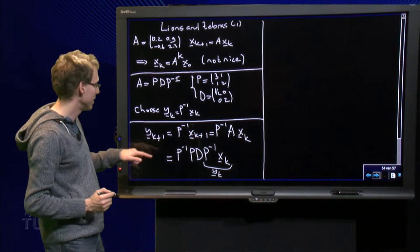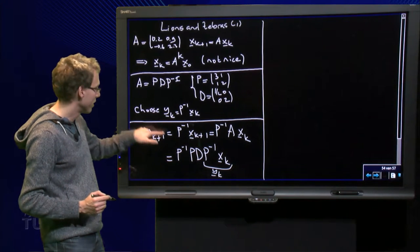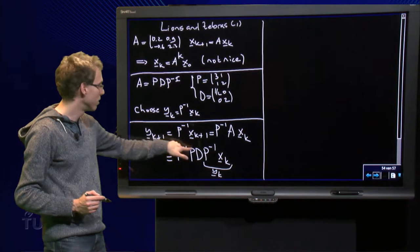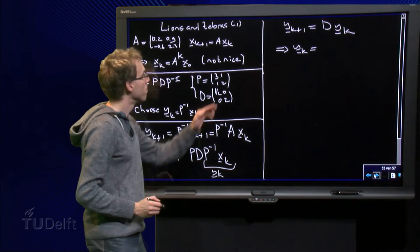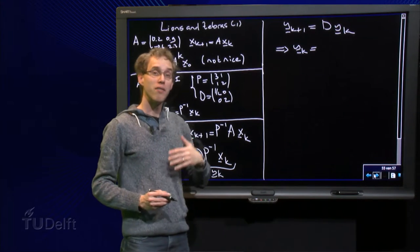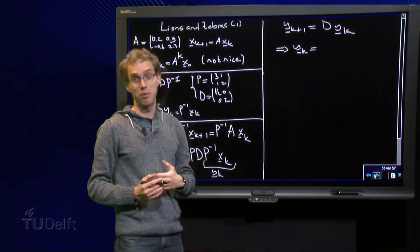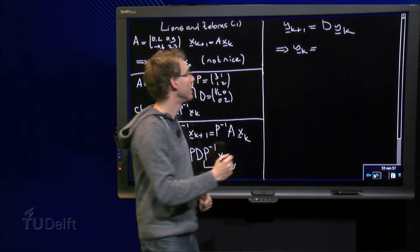So what do we get in the end? Y_{k+1} equals, this cancels out, D times y_k. There we are. And we know how to solve this dynamical system for y_k. It is standard.